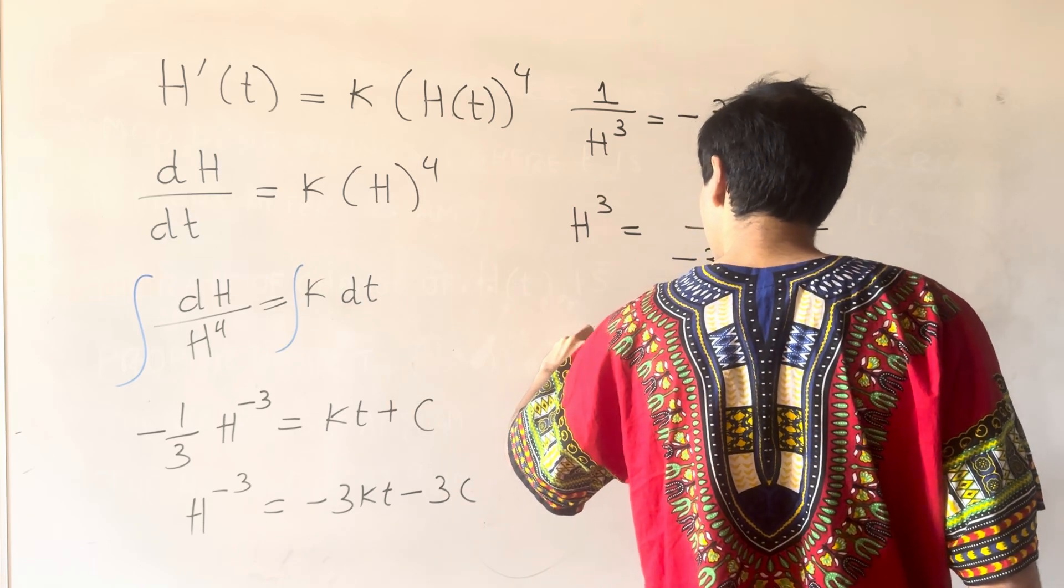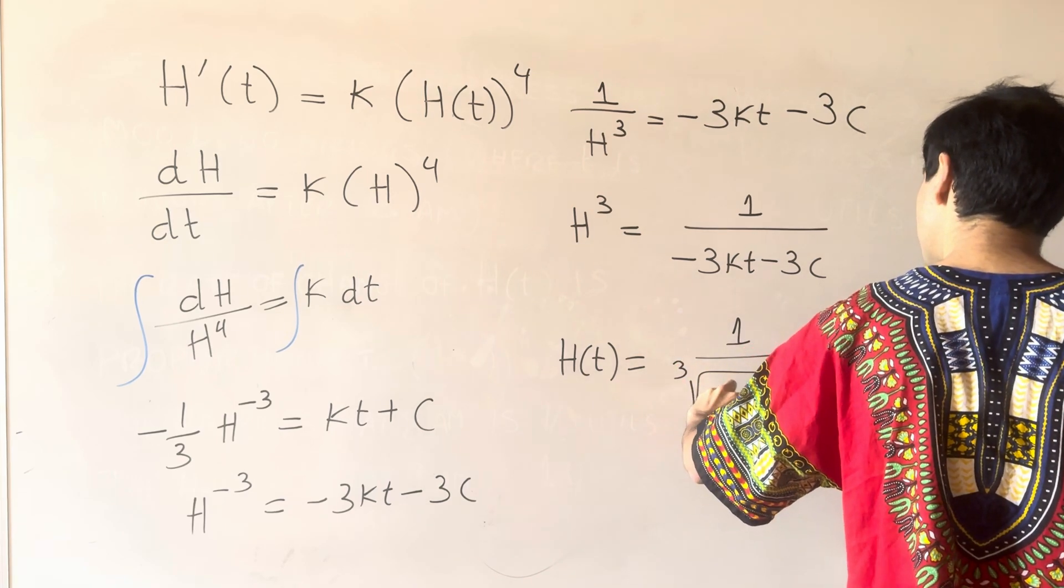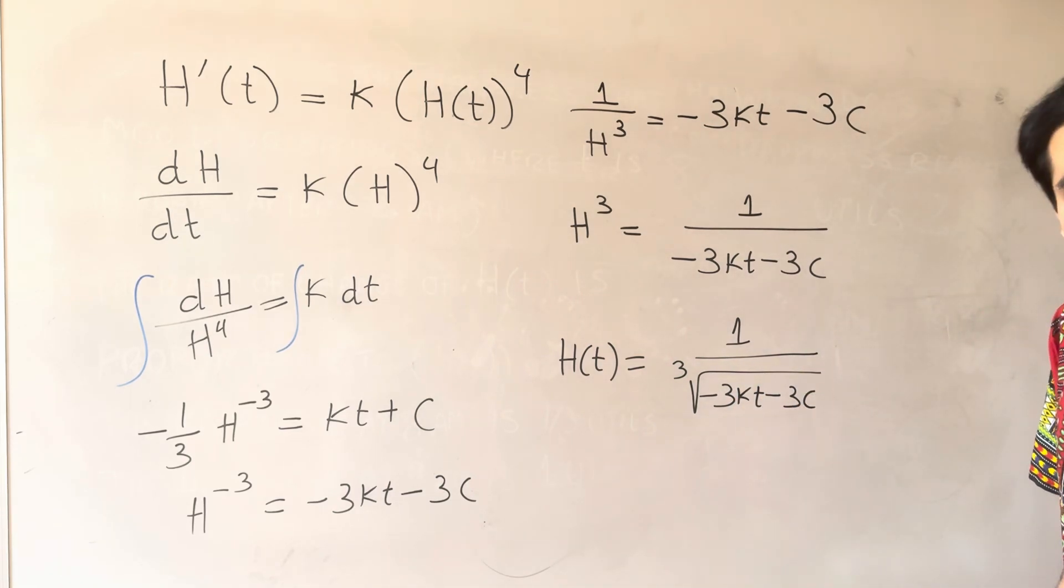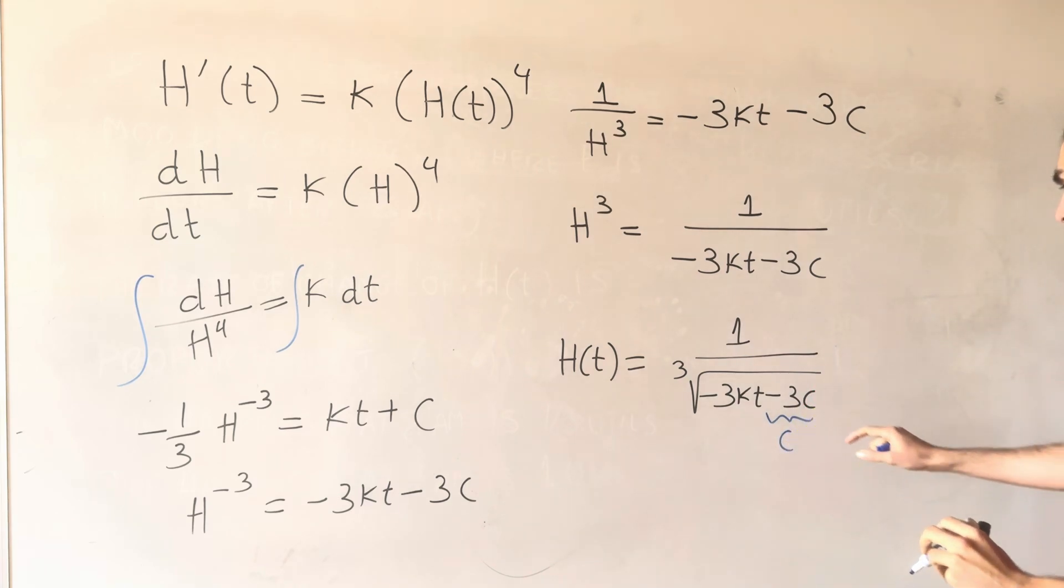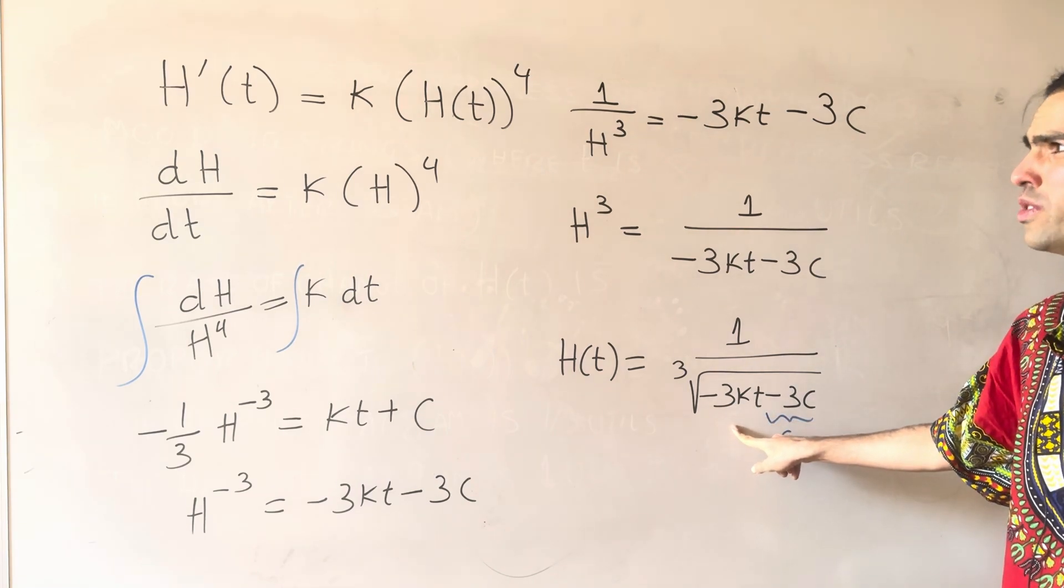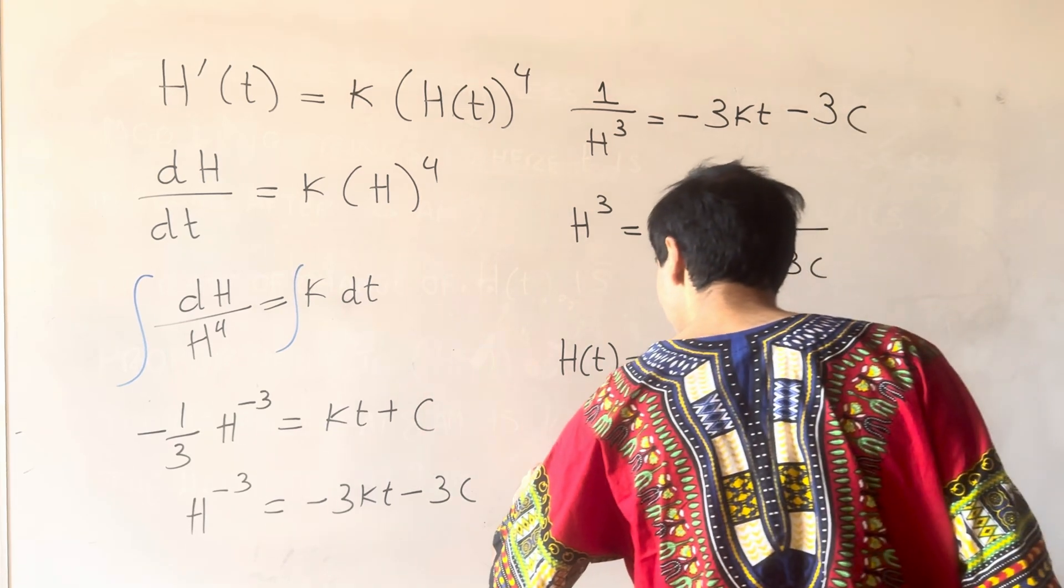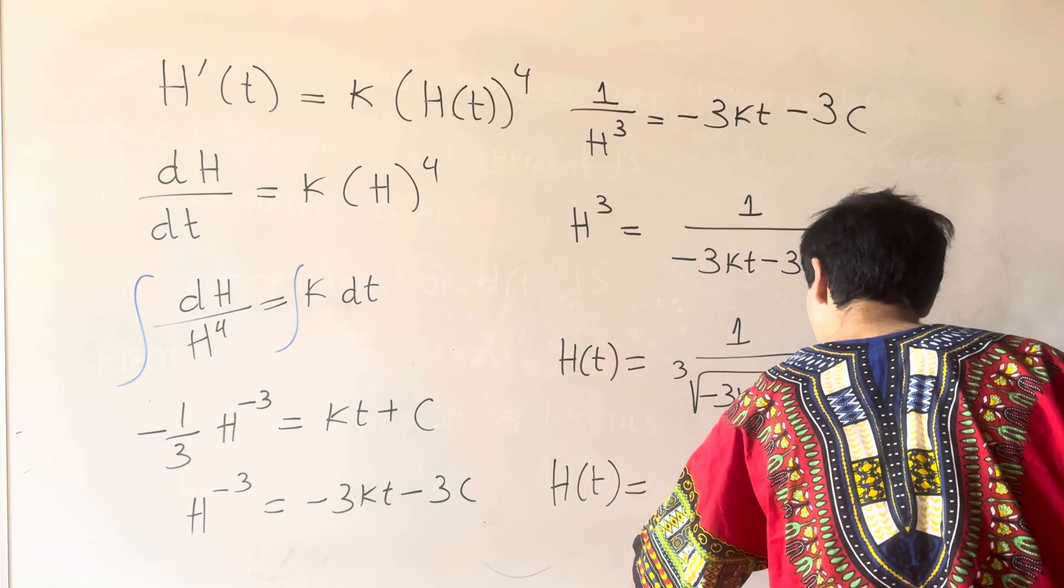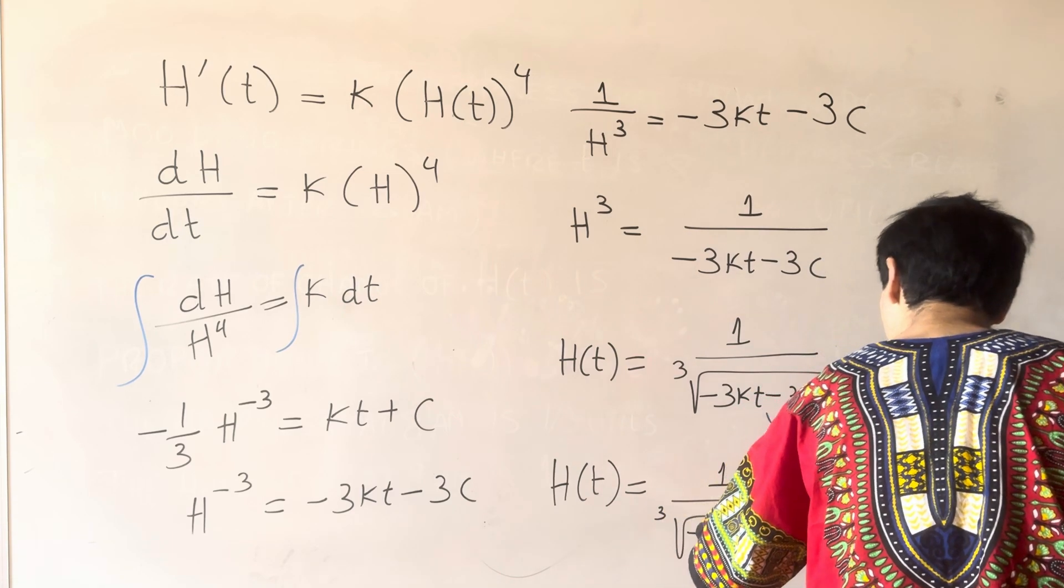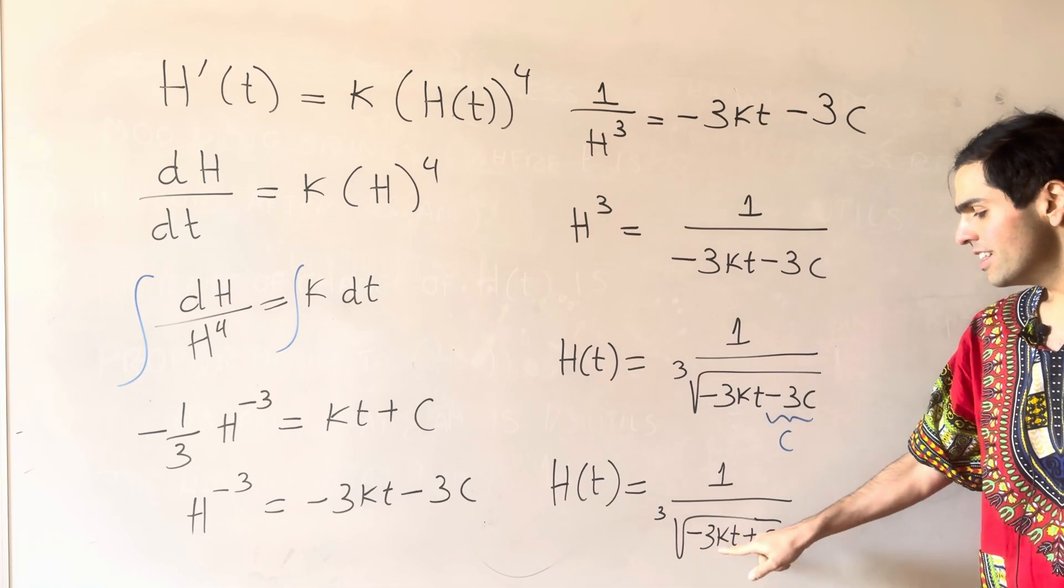And then finally, H of T is the cube root of that, so 1 over cube root of minus 3K dT minus 3C. And we can simplify this a little bit, so C is an arbitrary constant, and so it's minus 3C. So we can replace the minus 3C by C. Strictly speaking, we can also do that with K, but I'd rather not because K appears in the differential equation. And so, what we get is H of T is 1 over cube root of minus 3K dT plus C. And now, what we want to do is, we want to use the initial conditions and the extra condition to solve for K and C.